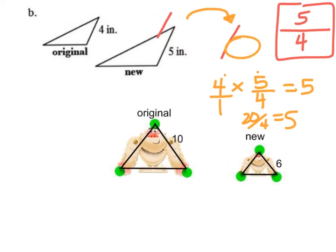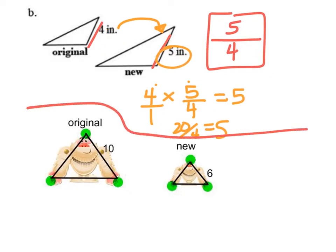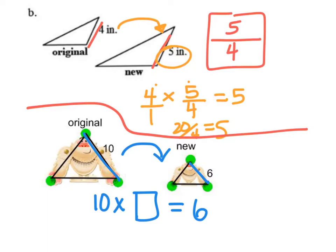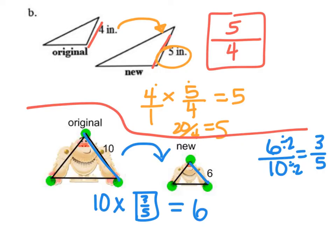For the second problem, the scale factor is the new side, 6, over the original, which is 10. Simplifying 6/10 by dividing both by 2 gives 3/5. Let's verify: 10 times 3/5 — putting a 1 under there: 10 times 3 is 30, over 1 times 5, which is 5. 30 divided by 5 is 6. So my scale factor on this second problem is 3/5.